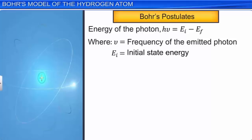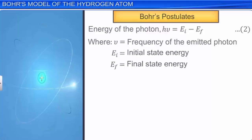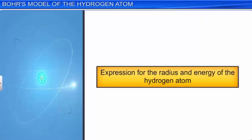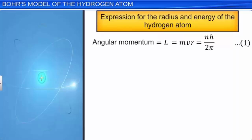Let us now derive the expression for the radius and energy of the hydrogen atom. From equation 1, we can write mvₙrₙ = nh/2π, where n is an integer, rₙ is the radius of the nth possible orbit, and vₙ is the velocity of the electron in the nth orbit — equation 3. The allowed orbits are numbered 1, 2, 3, and so on according to the values of n, which is called the principal quantum number of the orbit.